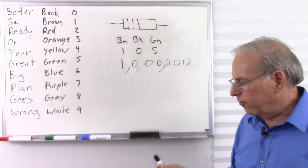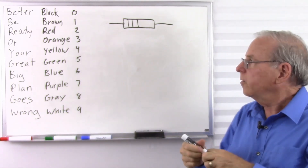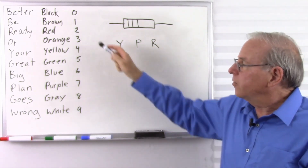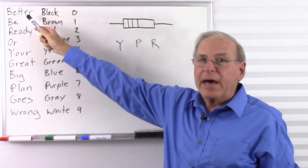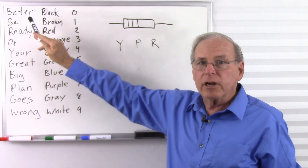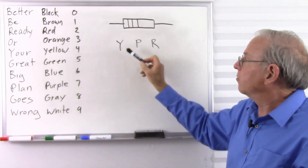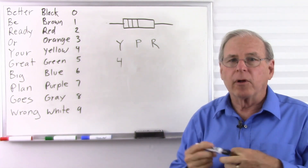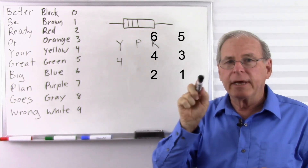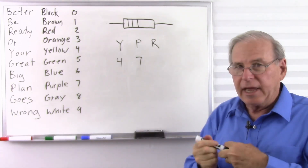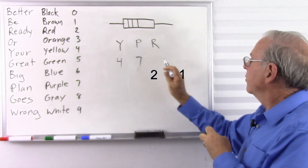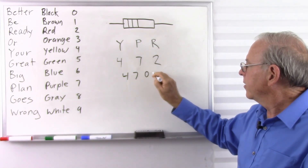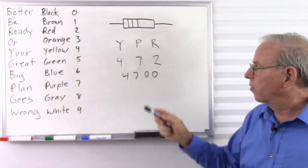Let's pick another random resistor. This one is yellow, purple, red — a fairly common one. Let's do this from memory without looking at the chart. Yellow: Be Ready Or Your — that's four. Purple: Be Ready Or Your Great Big Plan — that's seven. Red: Be Ready — that's two. So that's four, seven, and two zeros — four thousand seven hundred ohms, or 4.7K.